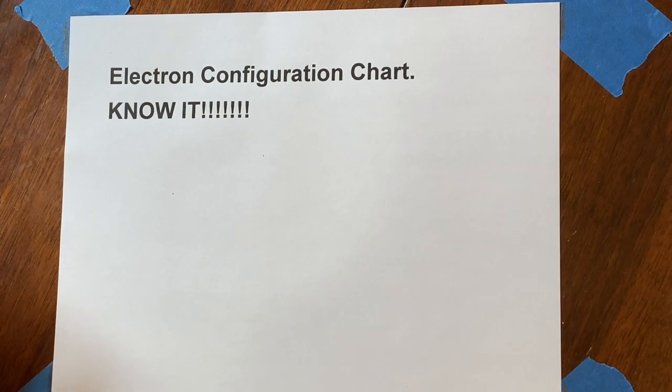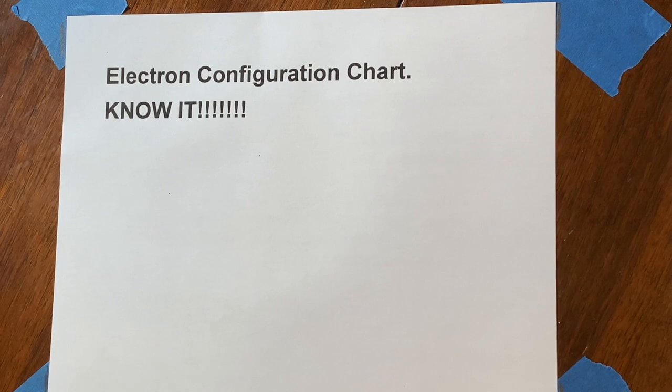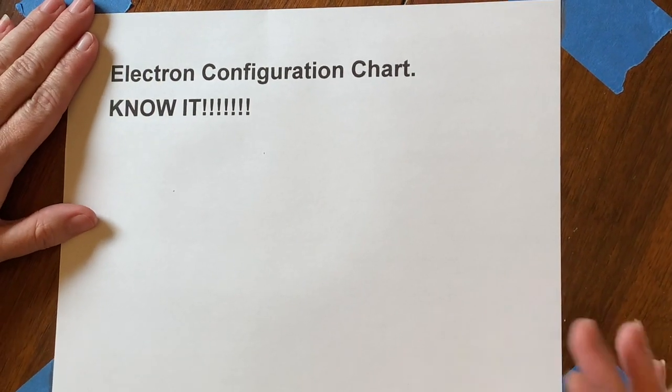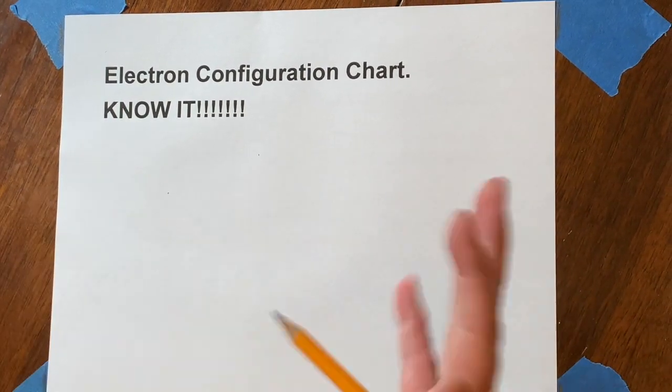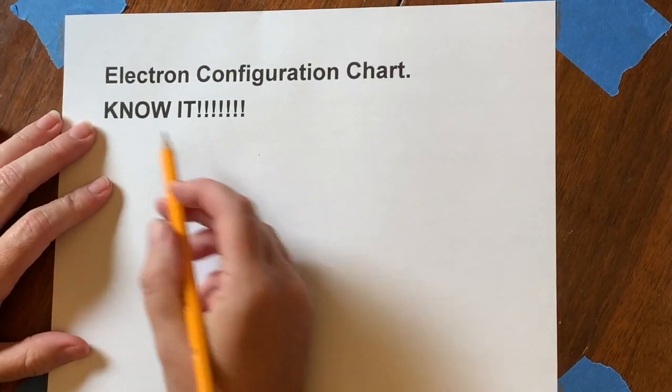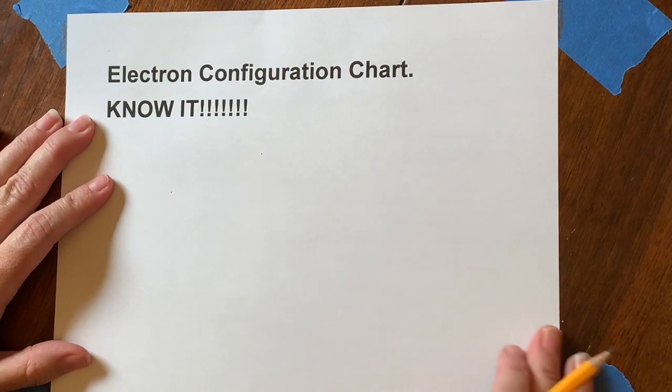Hi everybody. We're going to now talk about the more practical side of those quantum numbers and where we're going to actually be using them. Someplace we'll be using on and off throughout the year is what's known as an electron configuration.